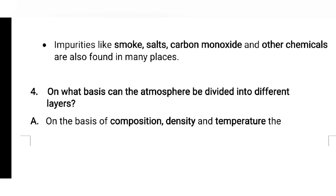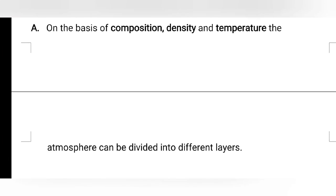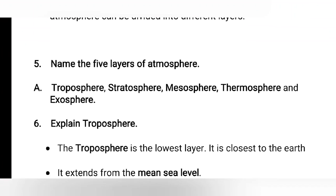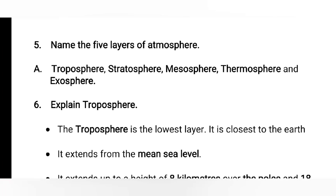On what basis can the atmosphere be divided into different layers? On the basis of composition, density, and temperature, the atmosphere can be divided into different layers. The five layers of atmosphere are: troposphere, stratosphere, mesosphere, thermosphere, and exosphere.